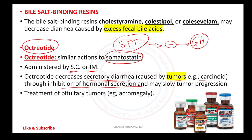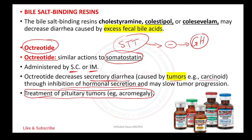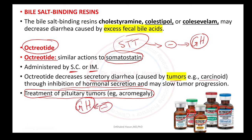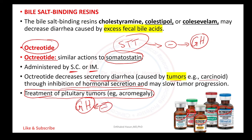Octreotide can also be used to treat acromegaly due to a pituitary tumor. For example, if a patient comes to the clinic with acromegaly and very high growth hormone levels on blood tests, the appropriate medication to inhibit growth hormone secretion would be octreotide — and that is the correct answer.